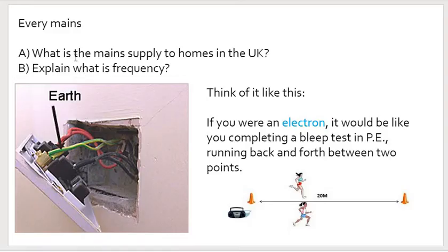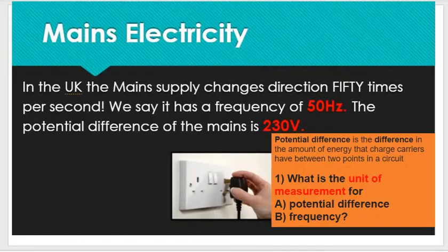Question: can you remember what is the main supply to the homes in the UK? And can you explain what is frequency? Did you get that right? Frequency is the number of times the main supply changes direction in a second. And the main supply in the UK is 230 volts. So it changes direction 50 times or 50 hertz per second. And the main supply in the UK is 230 volts. Write that down if you never got that.